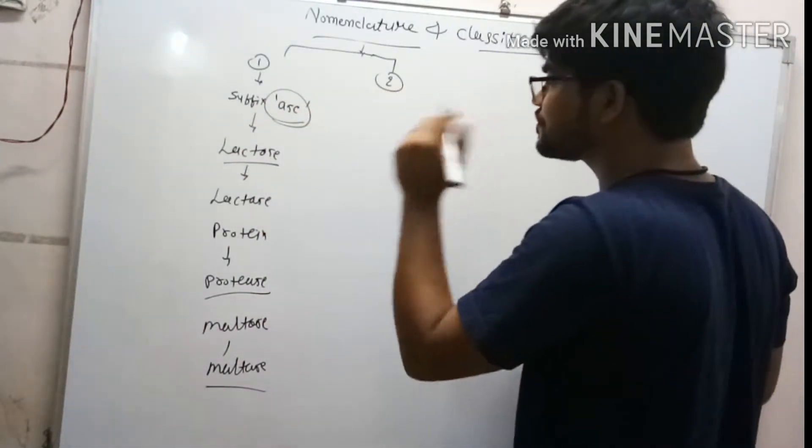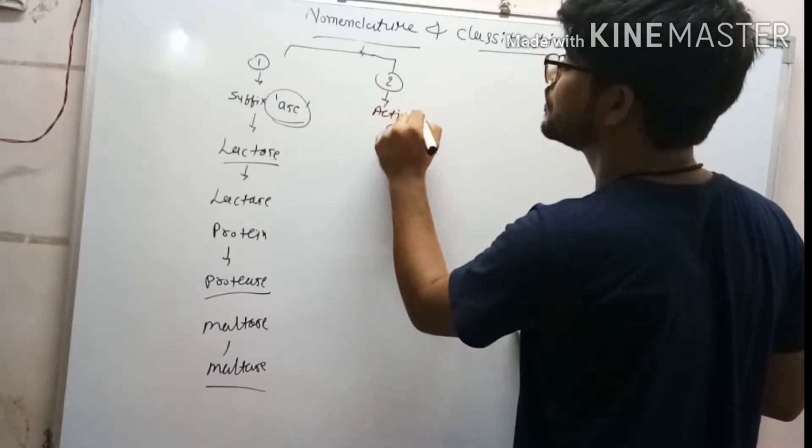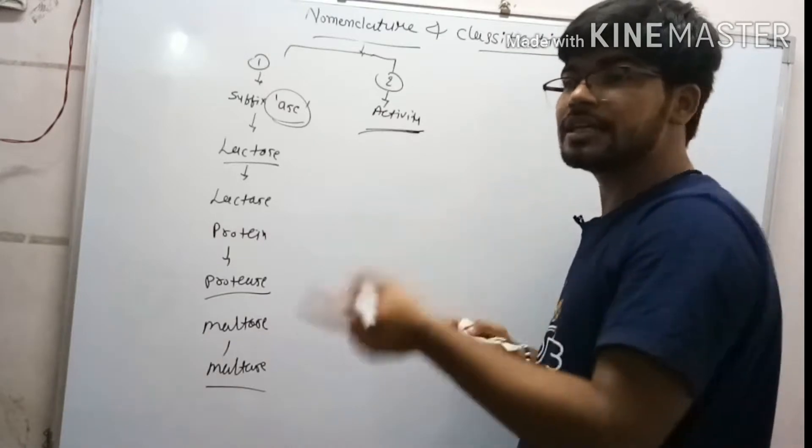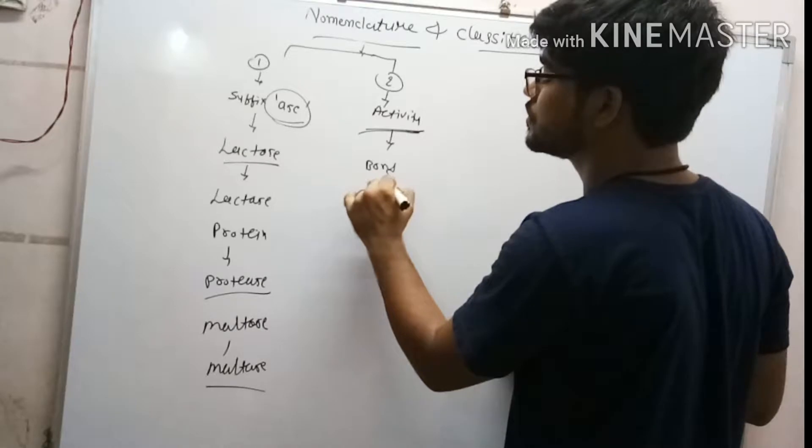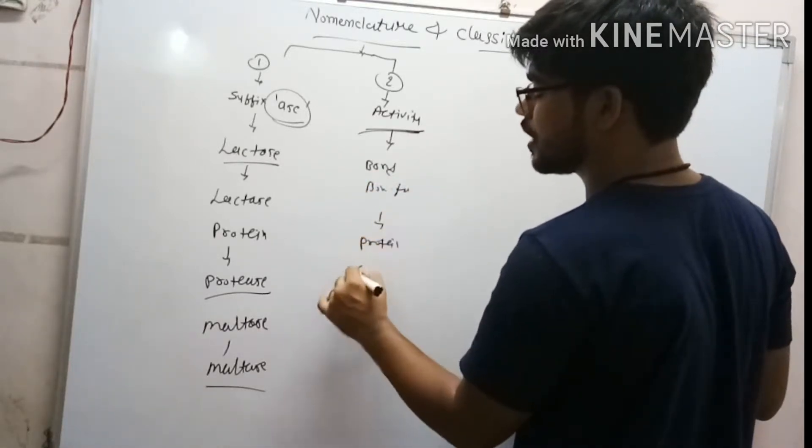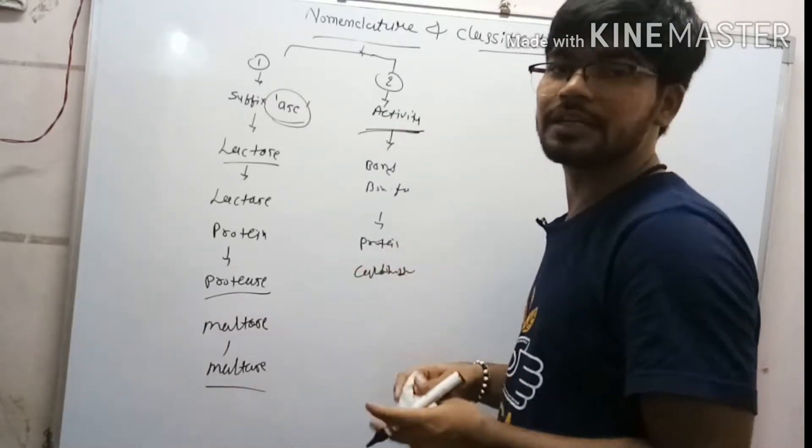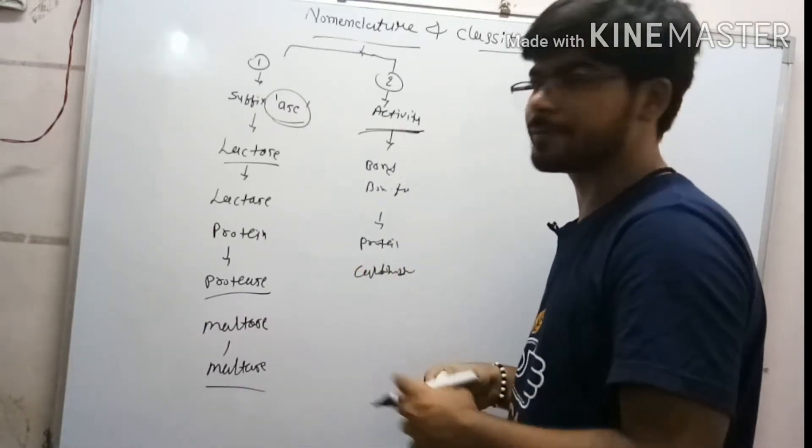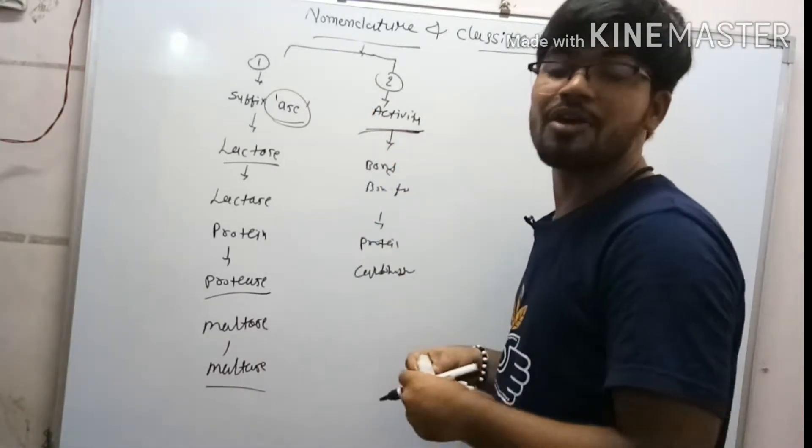This second method is based on their activity, in which activity performed like bond breakdown, bond formation, protein degradation, carbohydrates, based on which activity like cleavage, like hydrolysis, anything. These two types of nomenclature is given to enzyme by enzyme commission by biochemistry department.